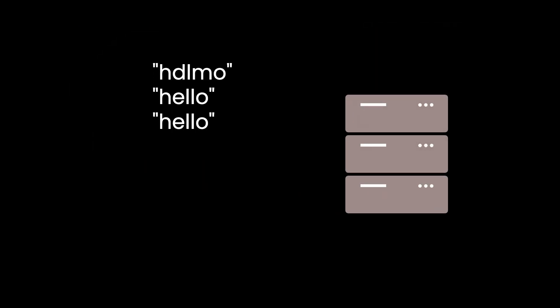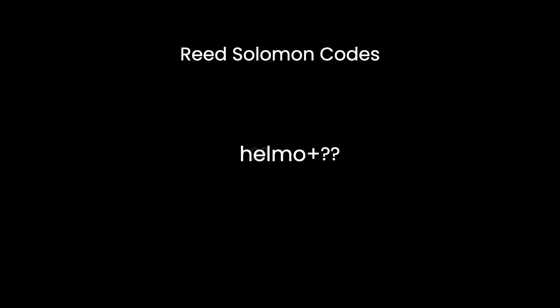So how does this actually happen? Well, the naive solution is to just send the same message three times. That way any one letter that gets switched can be repaired. But that's inefficient and wasteful. Instead we can use Reed-Solomon codes, which is a system that allows us to add two extra characters to a message to fix one error.